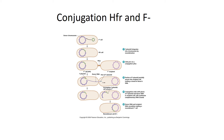The HFR bacterium and the F-minus bacterium connect to each other using the conjugation or sex pilus and draw closer together. The HFR cell then begins transferring DNA through the pilus to the F-minus cell, starting at the middle of the DNA for the F, or fertility plasmid. So part of the fertility plasmid DNA is transferred along with a bunch of chromosomal DNA. However, the two bacteria are never going to stay connected long enough for the entire chromosome and entire fertility plasmid to be transferred — they will break apart before that happens.